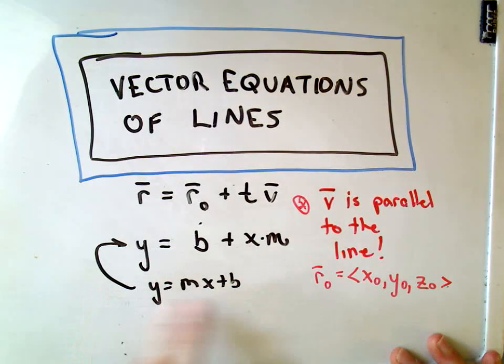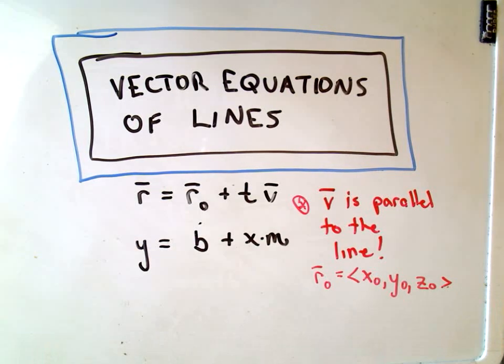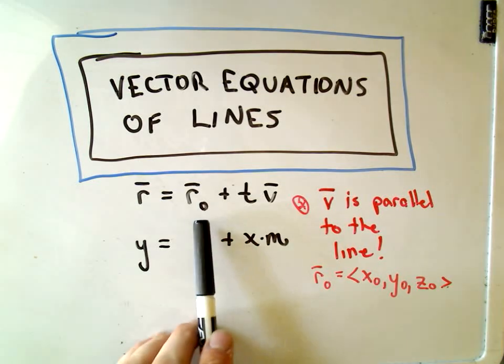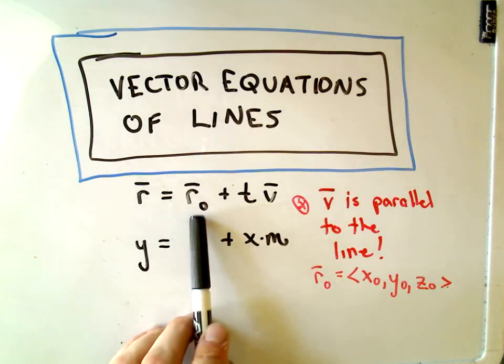It's kind of analogous to me. It's not the same, but this is a way for me to remember it. In slope intercept, b is a point that the line goes through—well, it's actually a very specific point, it's the y-intercept. And instead of the y-intercept now, we're just using a generic position vector, but to me I think basically instead of b we're using a point on the line.